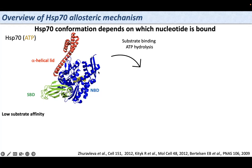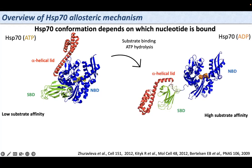This HSP-70 conformation is a low substrate affinity state. After substrate binding and ATP hydrolysis, HSP-70 is bound to ADP. In this conformation, the SBD is undocked from the NBD and the alpha-helical lid is closed. Subdomains 1B and 2B are in a more open conformation, and this is a high substrate affinity conformation.